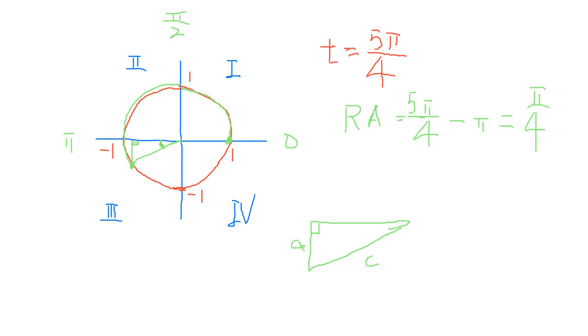We call this B. Let's say we're working with this angle — let's call this angle T. Can you tell me sine T, cosine T, and tangent T?